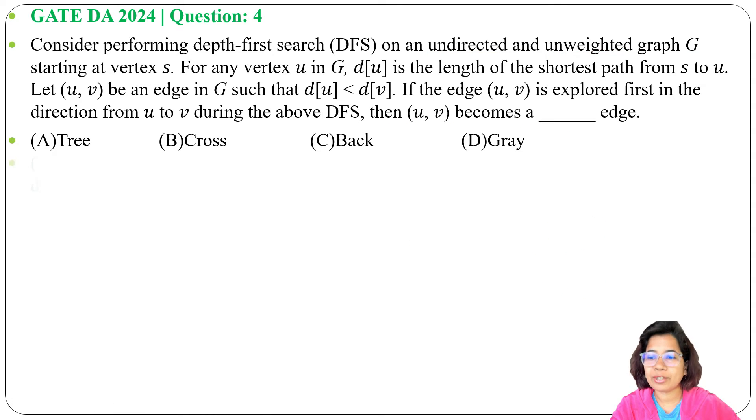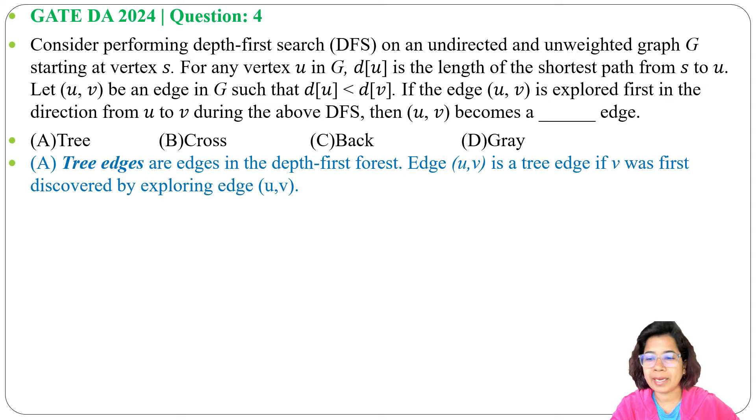Let's understand each option. Option A: Tree edges are edges in the depth-first forest. Edge (u, v) is a tree edge if v was first discovered by exploring edge (u, v). So whatever edges are present in DFS tree, these are called tree edges.